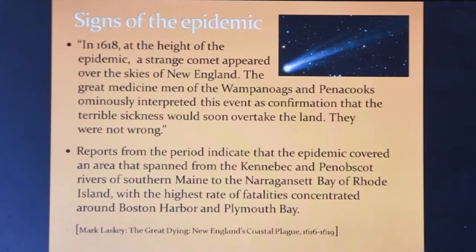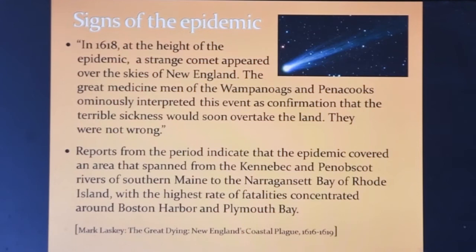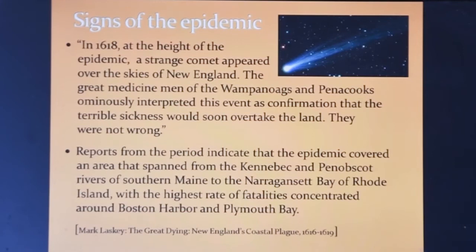Indigenous people had seen a strange comet appear over the skies of New England in 1618, and the medicine men interpreted this as confirmation that a terrible sickness would soon overtake the land. They were not wrong, as the epidemics spanned from southern Maine to Narragansett Bay, with the most fatalities in Boston Harbor and Plymouth Bay.